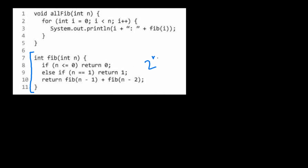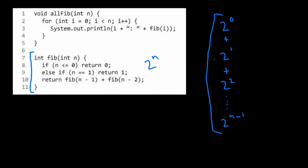Let's break it down. We know fib is O(2ⁿ). The first call is fib(0), so that's 2⁰. The next is fib(1), so 2¹. Then fib(2), so 2². This continues up to fib(n-1), which is 2^(n-1). So we're summing 2⁰ + 2¹ + 2² + ... + 2^(n-1) — exactly the same series as before. That equals 2ⁿ − 1, and dropping the constant gives us O(2ⁿ).